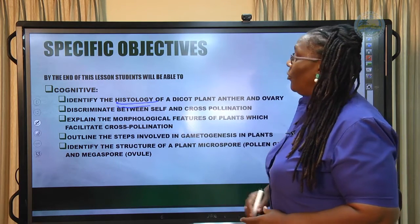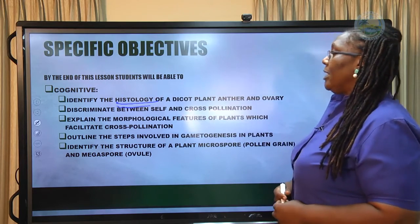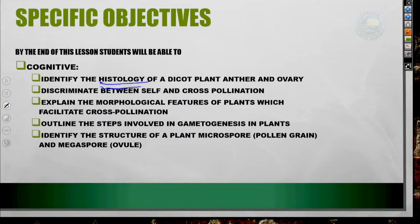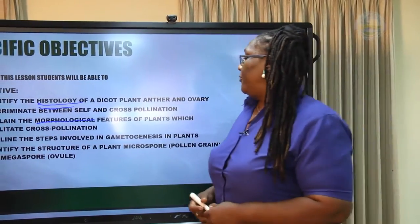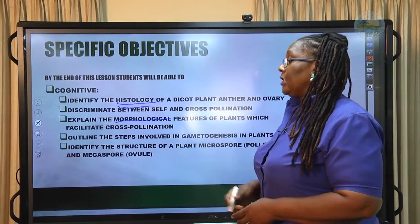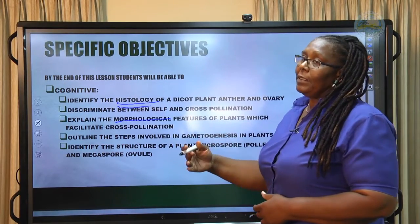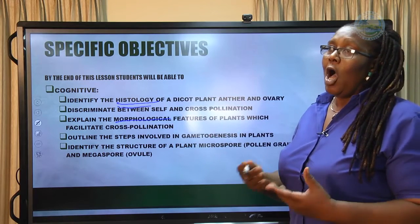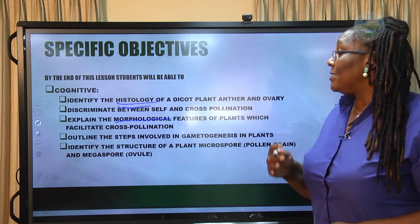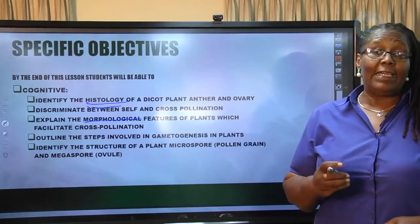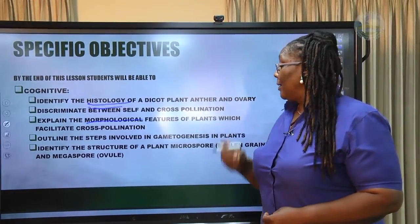We would also like to be able to discriminate between self and cross-pollination, and to explain the morphological features — meaning the anatomical features — that facilitate cross-pollination and help the plant avoid self-pollination. We would also like to outline the steps involved in the formation of the gamete, which is called gametogenesis.